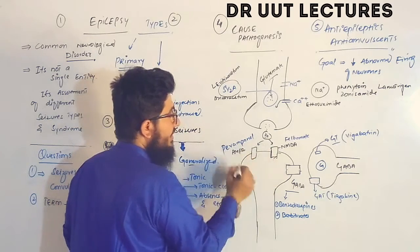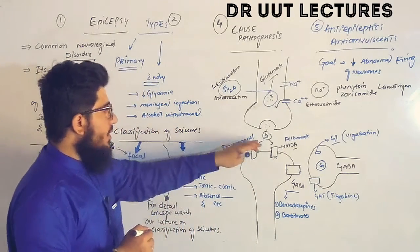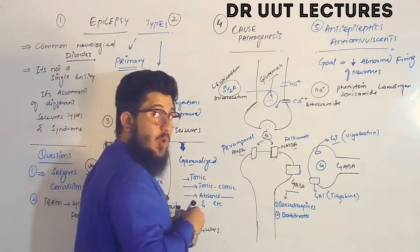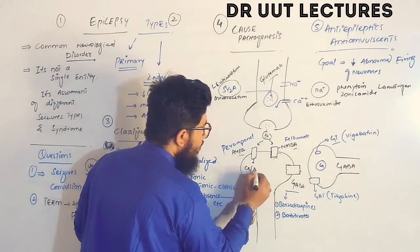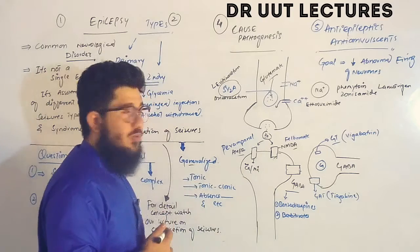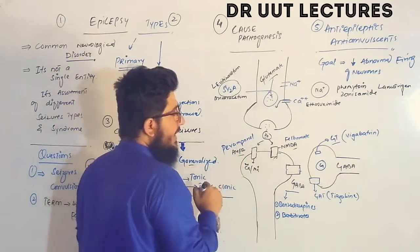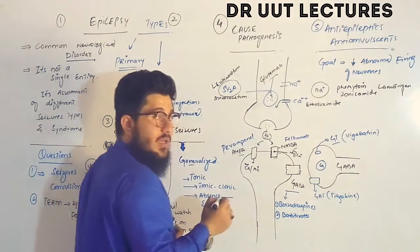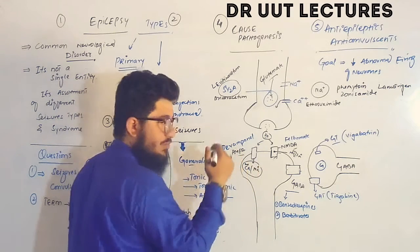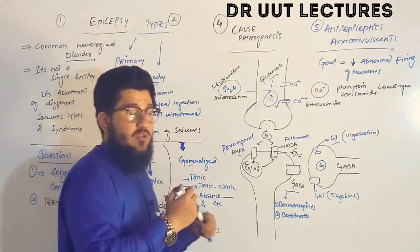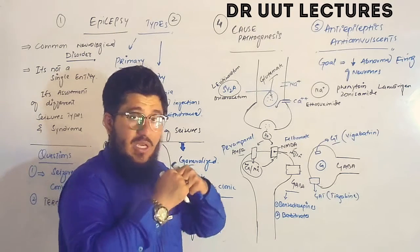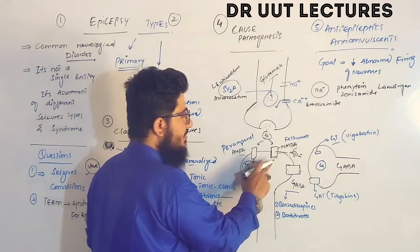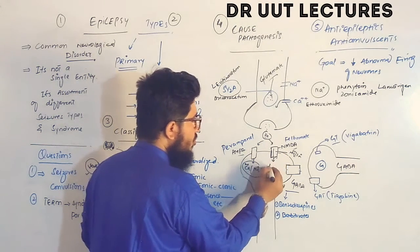The released glutamate binds to two receptors: NMDA and AMPA. The AMPA receptor is open and allows influx of sodium and calcium. The NMDA receptor is initially blocked by magnesium or zinc. As sodium and calcium enter via AMPA, they generate a repulsive force on the magnesium, causing it to move out of the NMDA channel, which then allows further sodium and calcium influx.